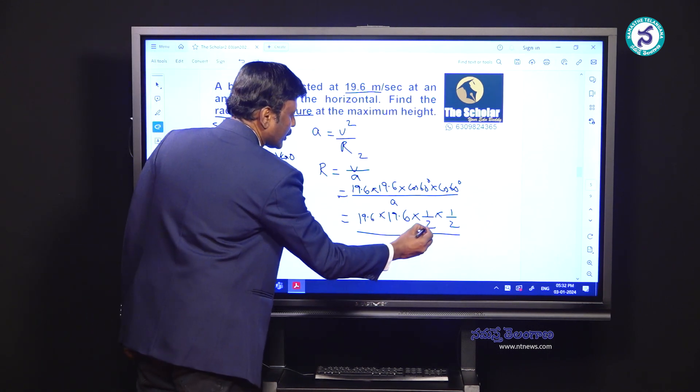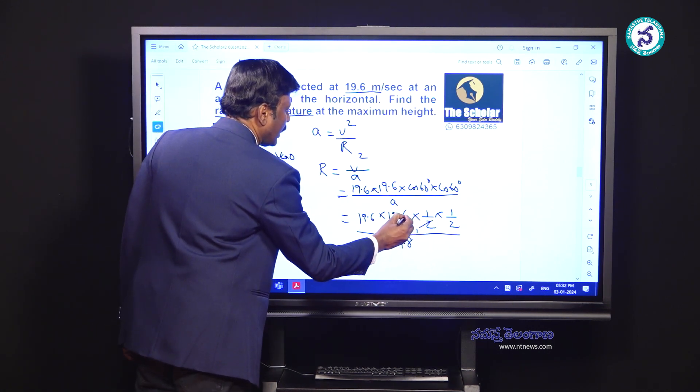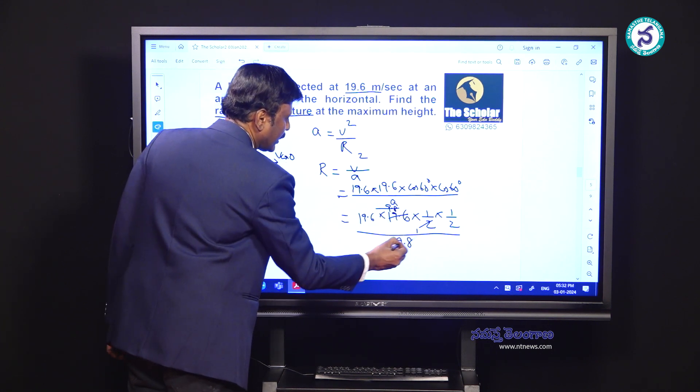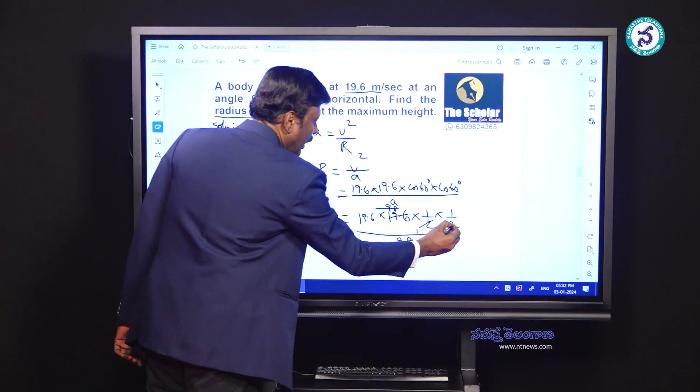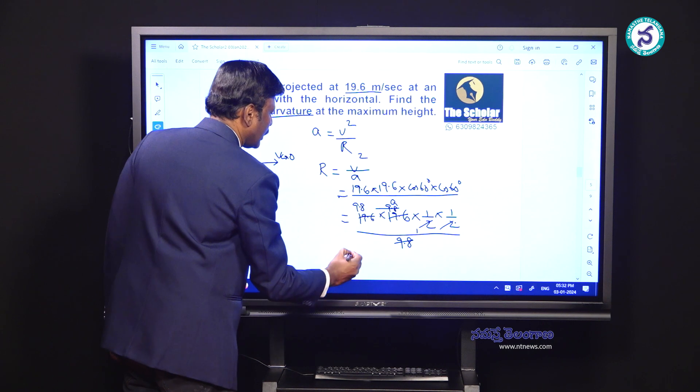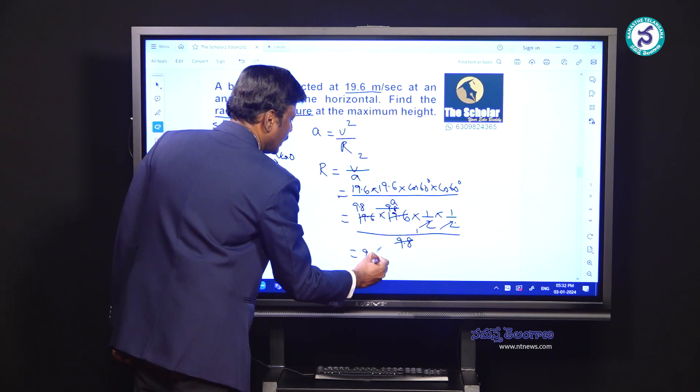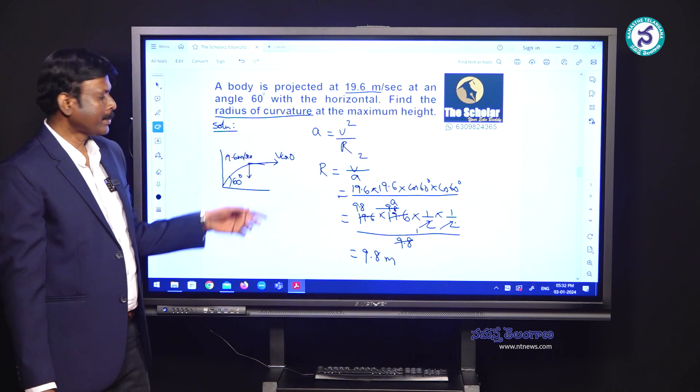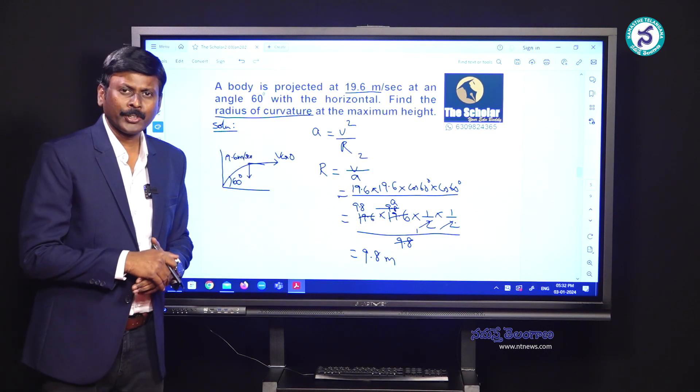Now let us do the calculation. Two 1s and two 9.8s, this 9.8 and this 9.8 get cancelled, again two 1s and two 9.8s. So the final answer is 9.8 meters. Therefore the radius of curvature of this particular numerical becomes 9.8 meters.